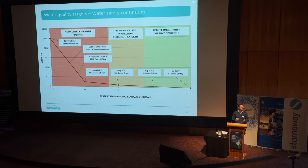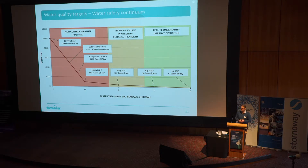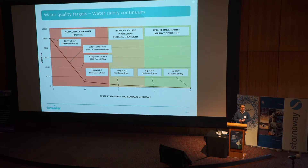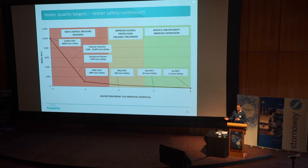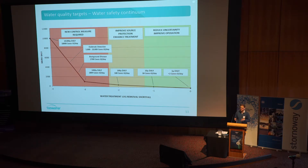Health-based targets is not a pass-fail thing. The methodology gives us a safety continuum — the water industry loves green, amber, red, and they put that in the graph. On the right, your target is zero deficit in terms of log removals; that's your one micro-DALY that the World Health Organization uses. If you're between zero and minus one, you're not at risk of an outbreak. Between minus one and minus two — the amber zone — you're still not causing massive illness, but you have more risk and should look at improving source protection or increasing treatment. Once you get into the red zone, you really need to do something quickly in terms of improving your treatment.